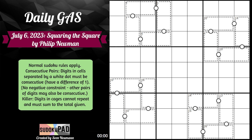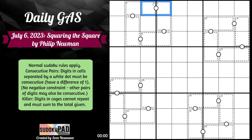So we'll go over that real quick. A white dot between two cells means that if this was a 1, the adjacent cell would have to be consecutive to it - it would have to be a 2. If this was a 6, this could be 5 or it could be 7. Both options are available because 5 is consecutive to 6, and 7 is consecutive to 6. The no negative constraint means just because two cells don't have a white dot between them doesn't mean they couldn't be like a 1 and a 2 - that is still allowed.